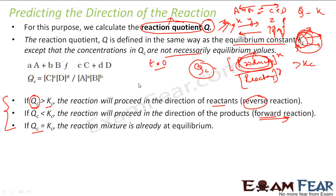Even if you don't want to memorize the rules, just understand the concept: Qc is the ratio of product and reactant concentrations at any time T. If Qc > Kc, product concentration is more than at equilibrium, so equilibrium shifts backward to reduce products. If Qc < Kc, product is less, meaning reactants are more, and the reaction moves in the forward direction to produce more product.